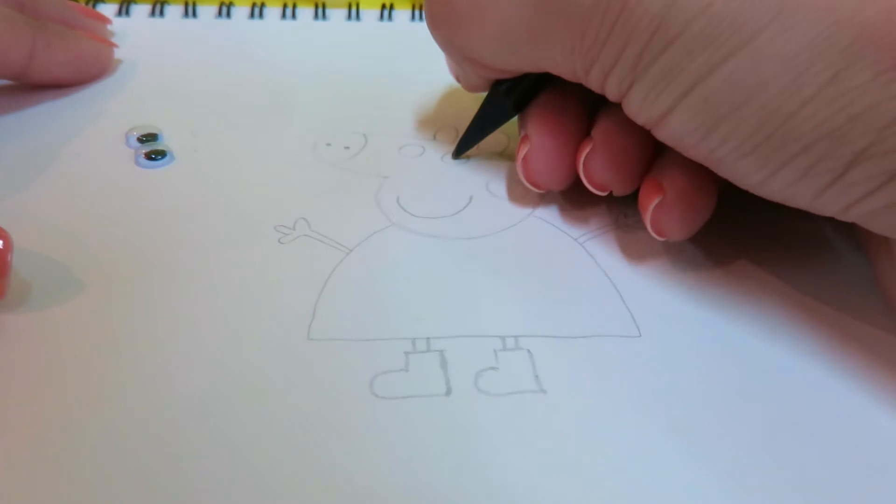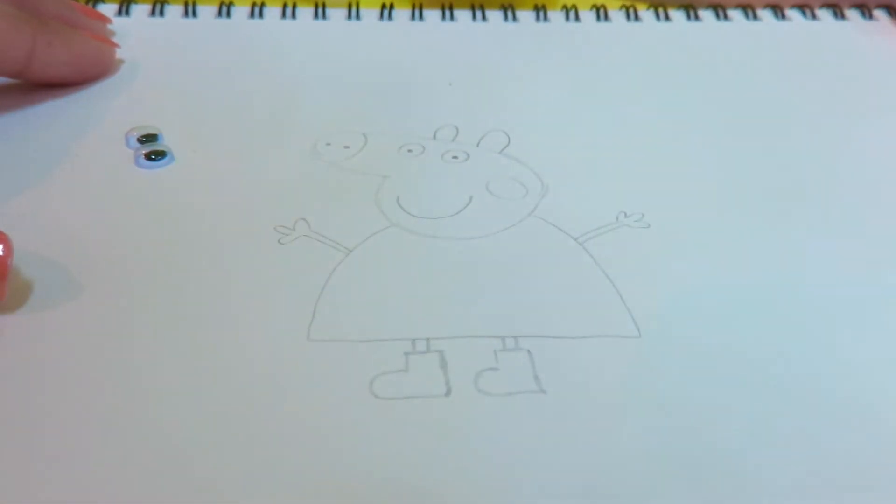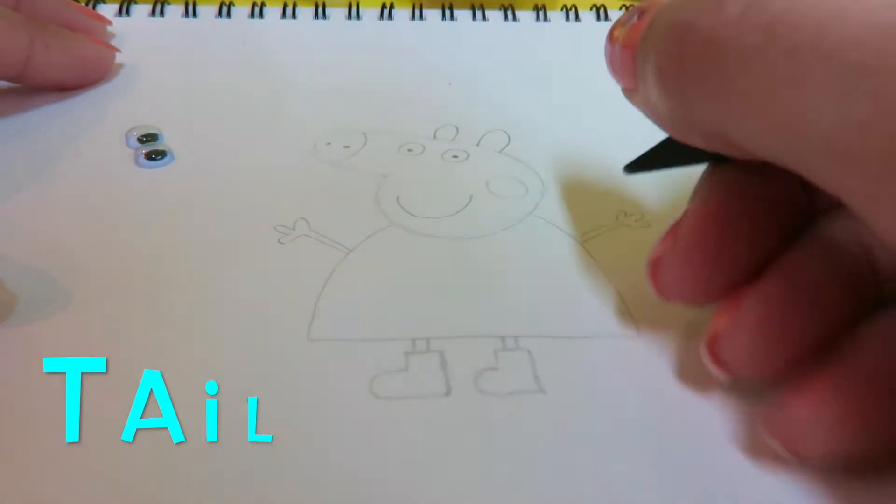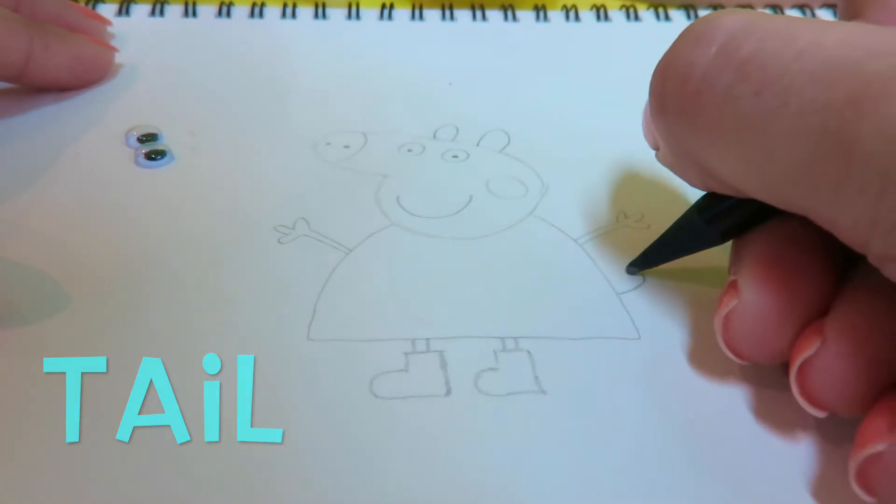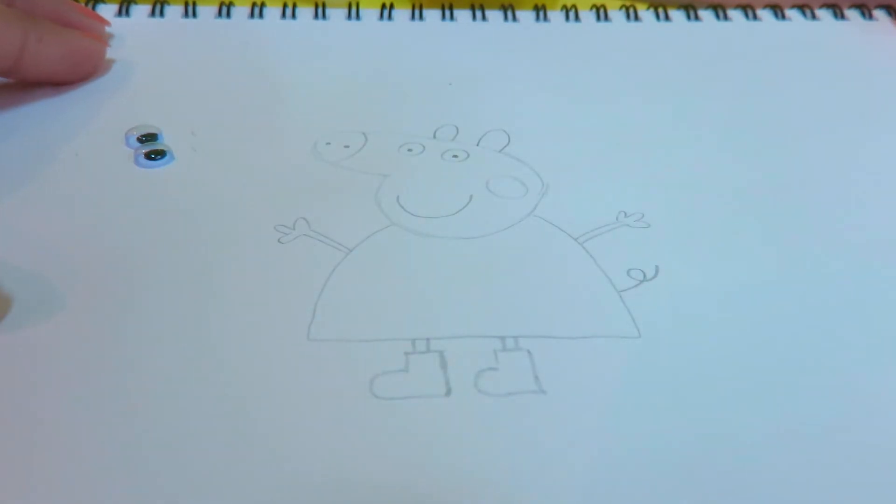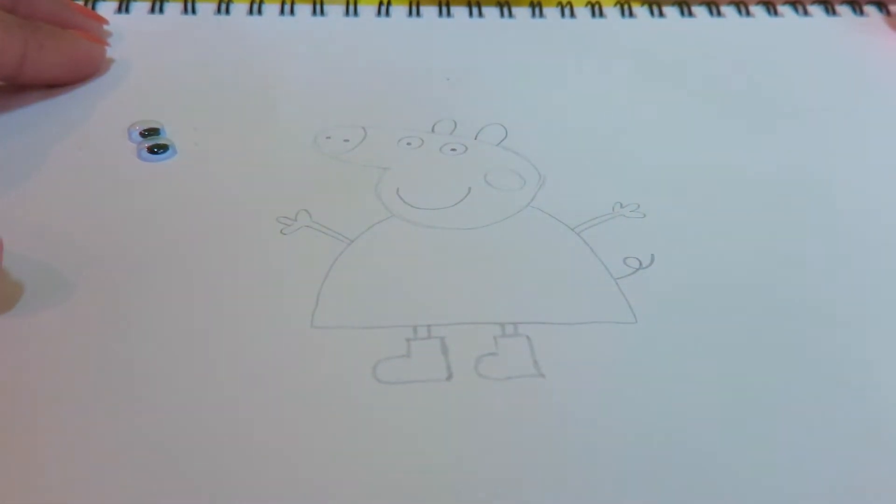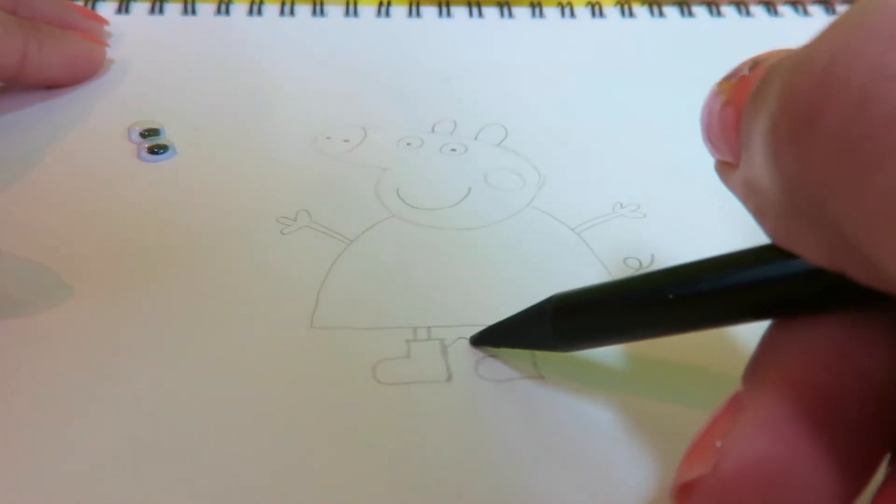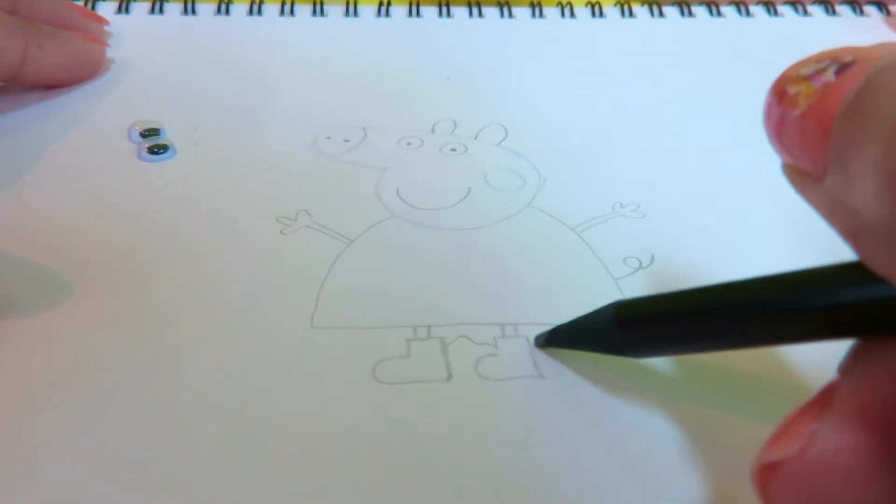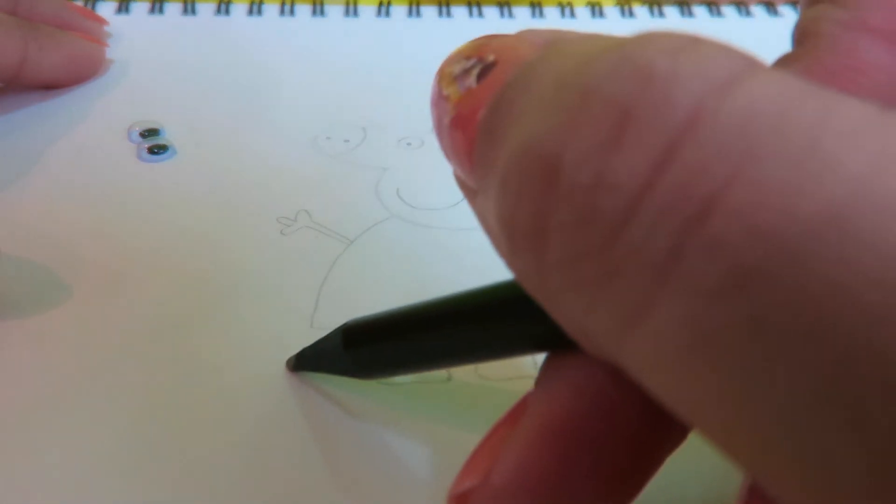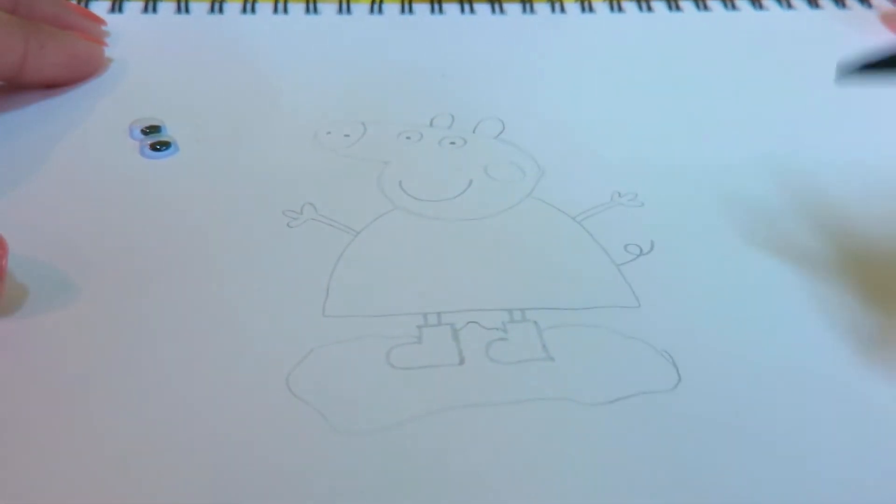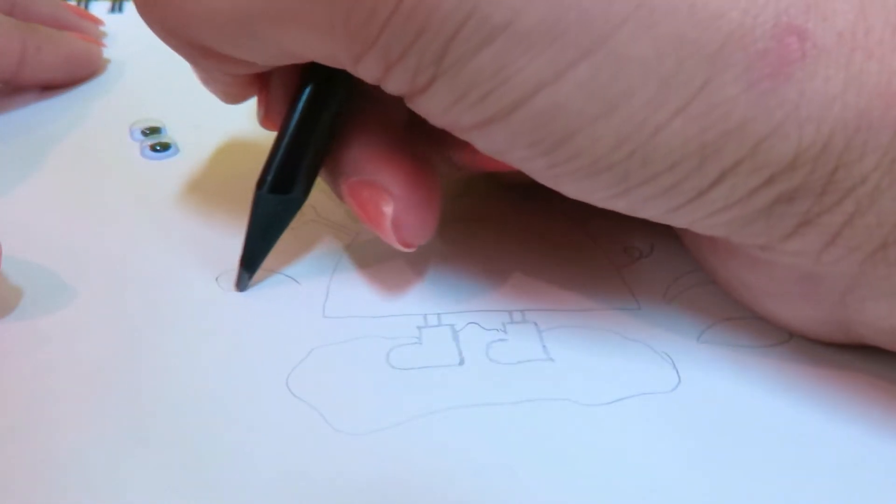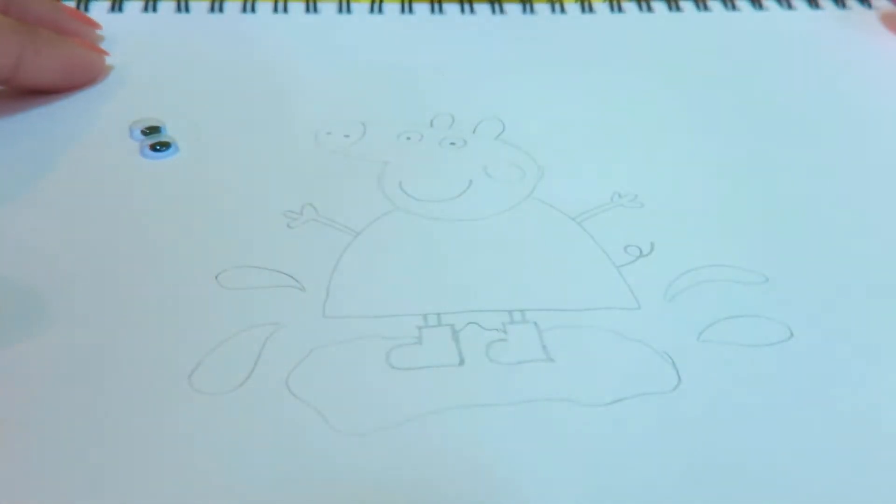Of course, he's got things inside. Then the tail. Like this. Now, George is supposedly playing in the mud. That's why he's wearing boots. Let's draw the mud here. And some splashes. Like this.